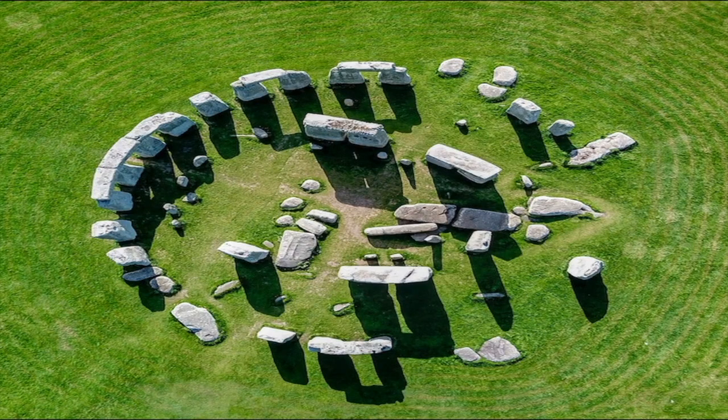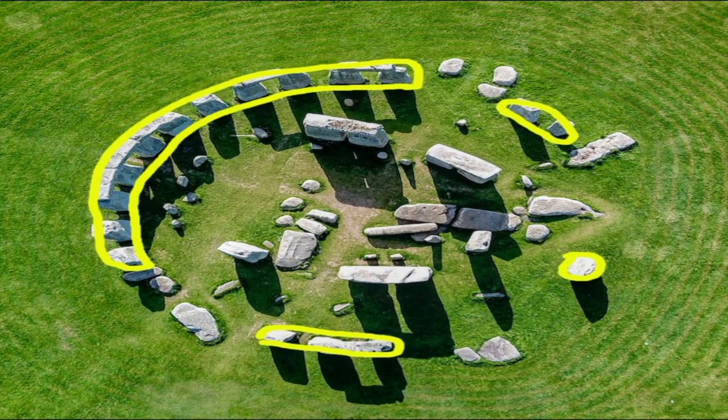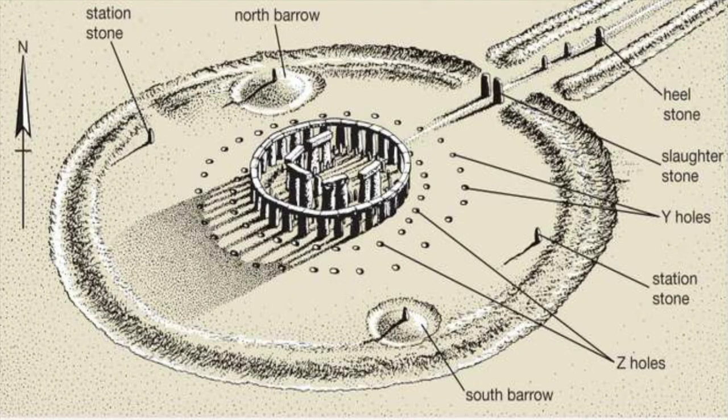Outside of the Blue Stone Circle, there is the Sarsen Circle, consisting of 30 ortholiths joined by convex lintels, of which 19 have been preserved. Around the Sarsen Circle there are two more circles called Z and Y, with 29 and 30 holes respectively.